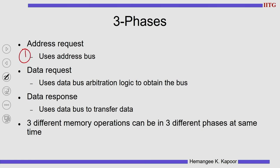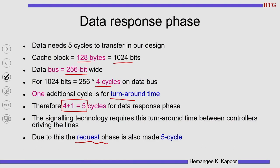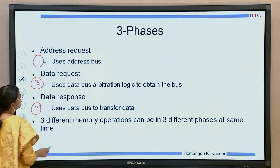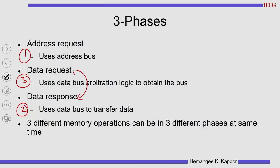We are going to see how the address request is generated, and we discussed the data response in the previous slide. But before sending the data response, the 5 cycles of data response are used only for transferring data — you cannot transfer data right away. You need to take permission to send the data, that is, bus arbitration is required. Then the receiver should be ready to accept the data. All this homework has to be done before data transfer, and that is done as part of the data request. So the response is actually combined with a request on the data bus, followed by the data transfer. These are the 3 things we have to look at.